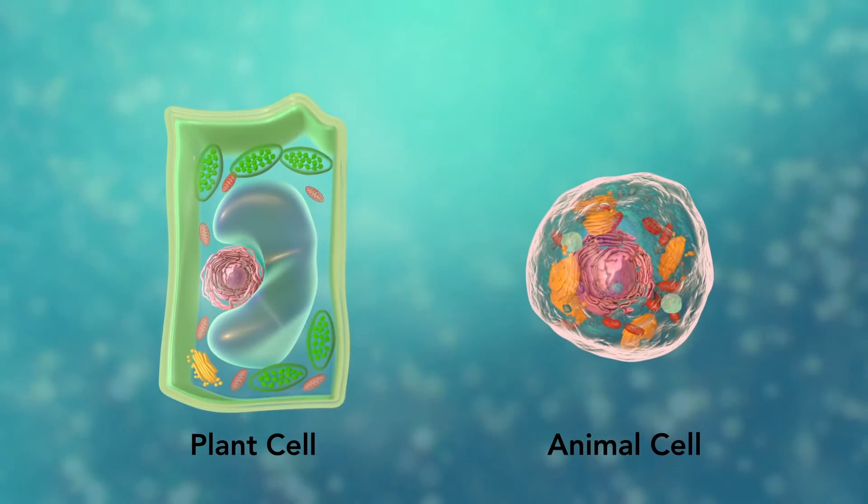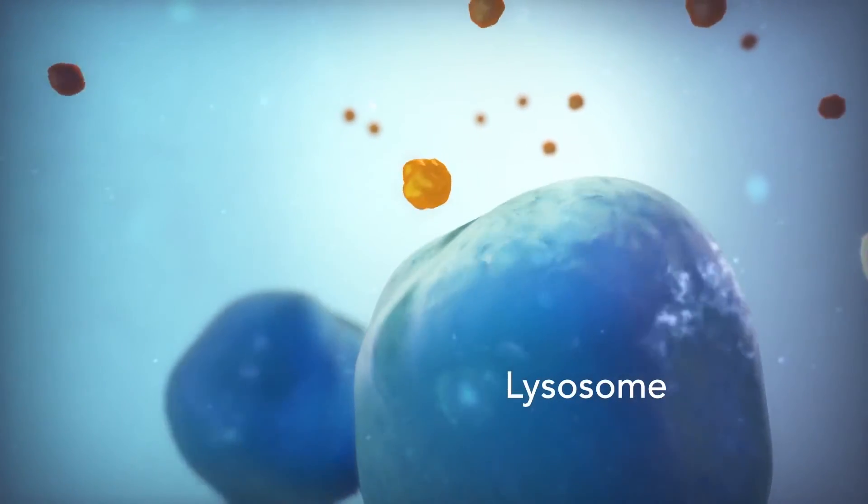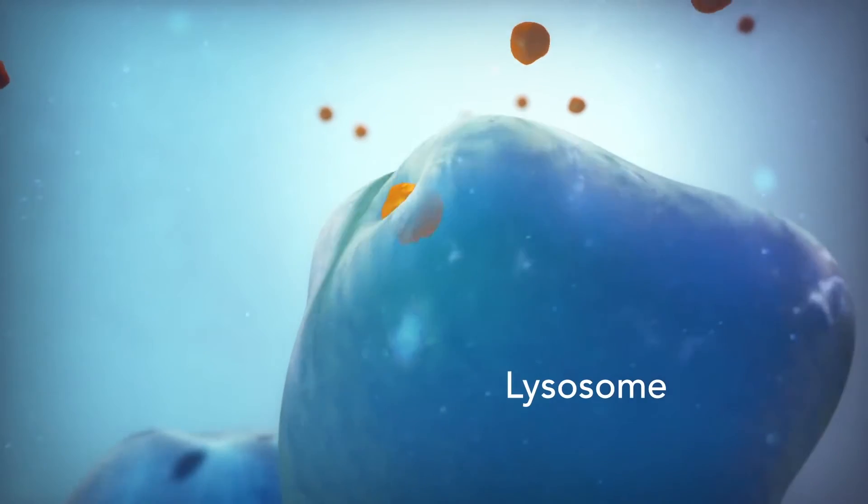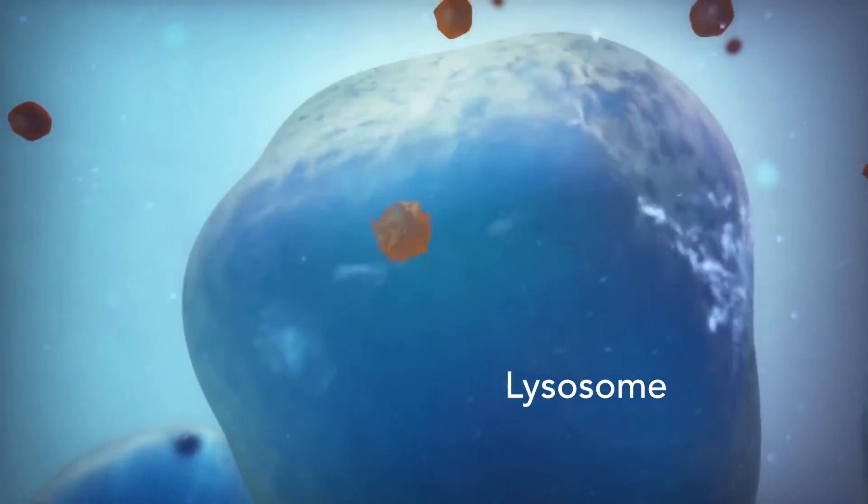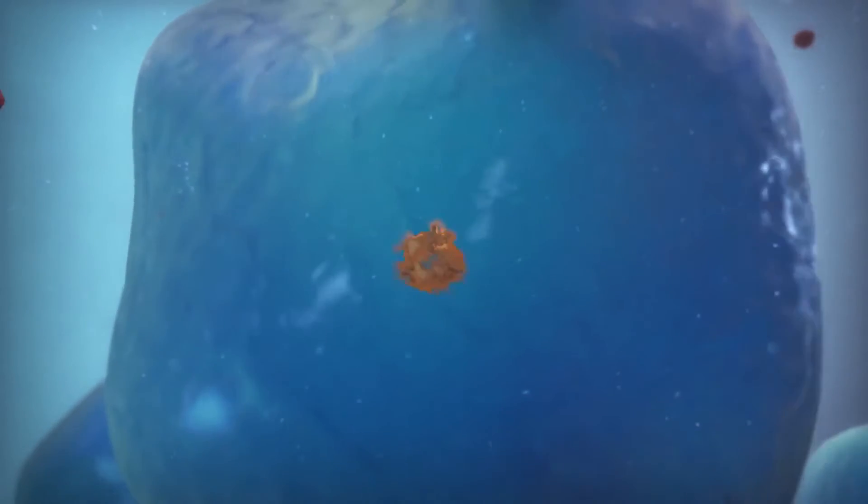Going back to the animal cell, you will see an organelle called a lysosome. Lysosomes are the garbage collectors that take in damaged or worn-out cell parts. They are filled with enzymes that break down this cellular debris.